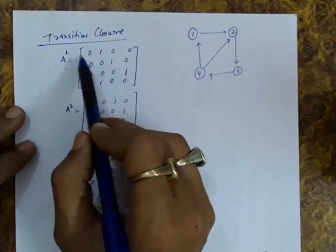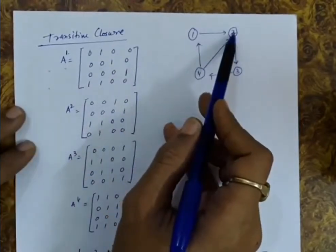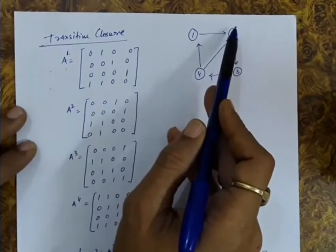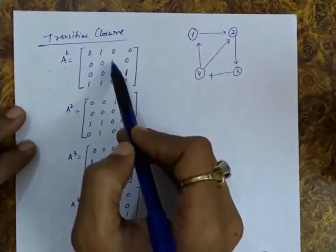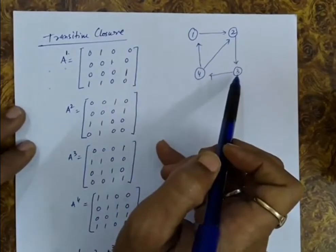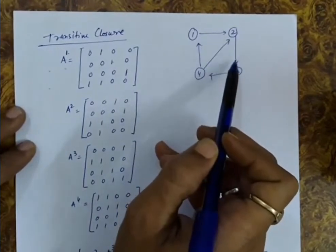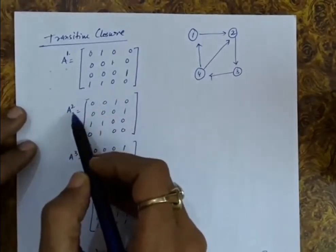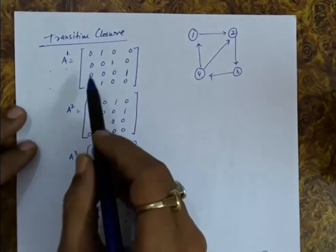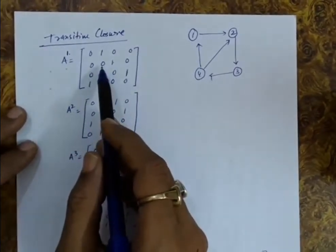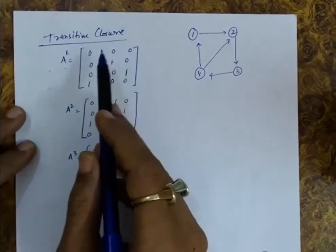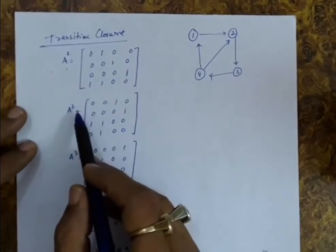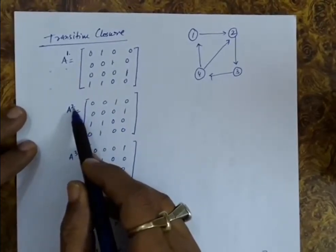Obviously, if the entry 1 to 2 is 1, there is a direct edge between 1 and 2, so the path length is 1. Similarly, if the entry 2 to 3 is 1, it means there is a direct edge between 2 and 3, with path length 1. From A, I have computed A squared, which is the multiplication of the A matrix with itself. This A squared is telling us all the paths of length 2.